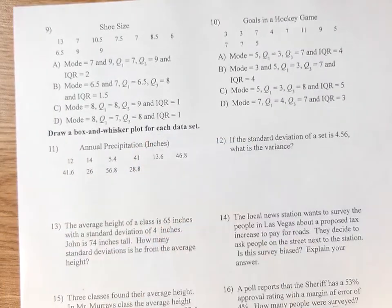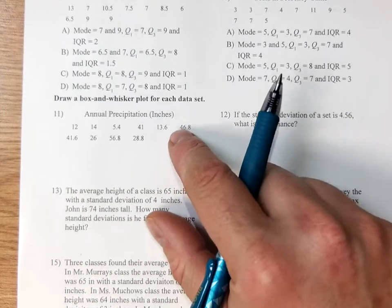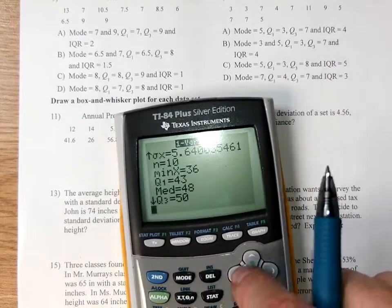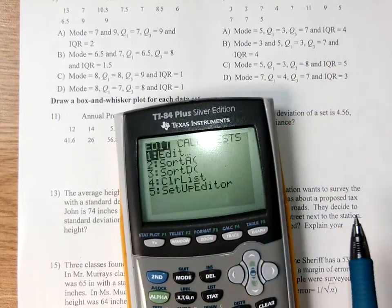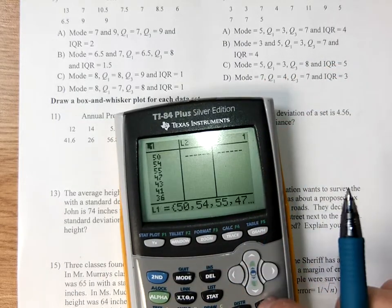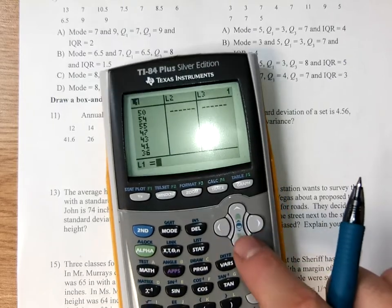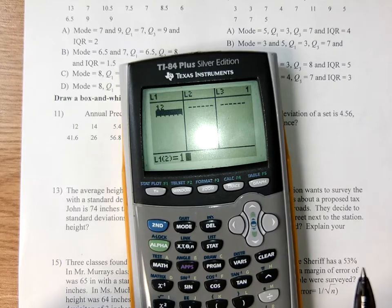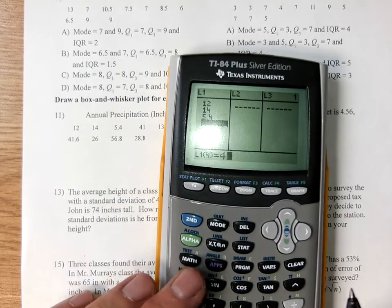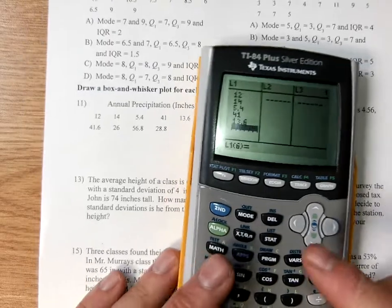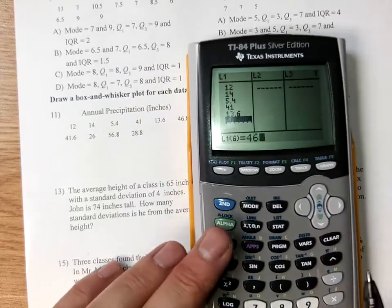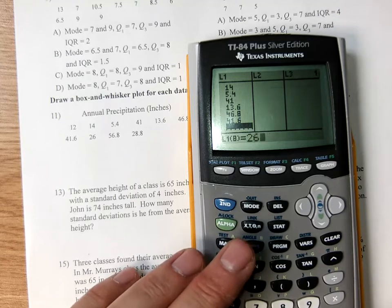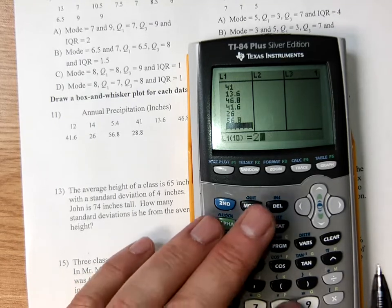So question 11, all I want you to do is draw the box and whiskers. So you can do the same thing for it. I go stat, edit, I clear at the top, push clear and push down. Type in the stats: 12, 14, 5.4, 41, 13.6, 46.8, 41.6, 26, 56.8, and 28.8.